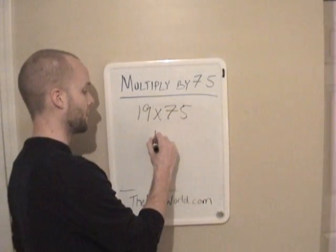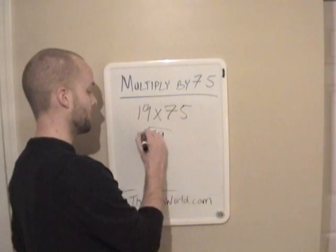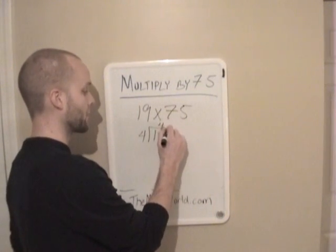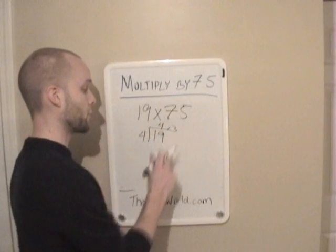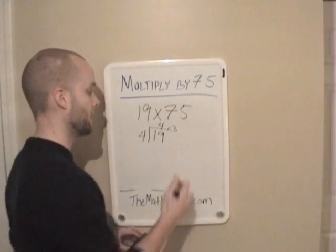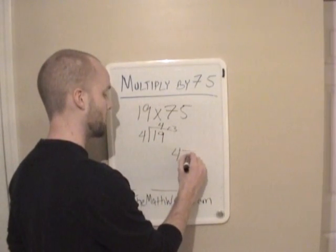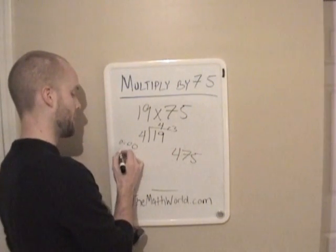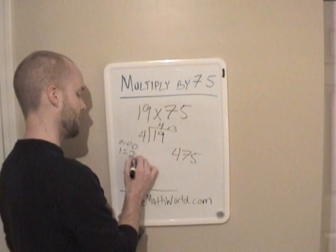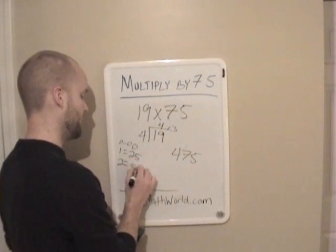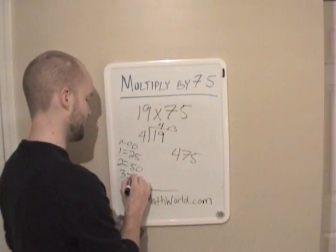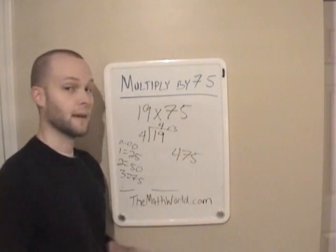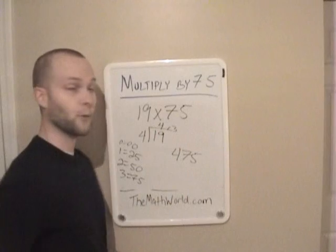And if you haven't watched that video, you can check that out. But 19 times 25, you first do the same thing, you divide by 4, so 19 divided by 4. In this case it's 4, with a remainder of 3. And with a remainder of 3, we write down 75. So our answer is 475. If you have a remainder of 0, you write down 00, 1 you write down 25, 2 you write down 50, and 3 you write down 75.